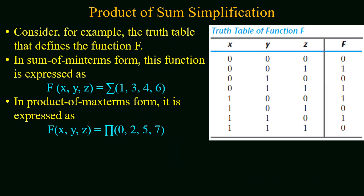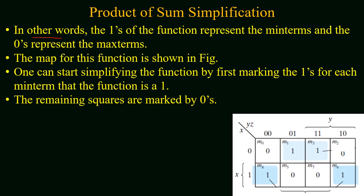Now consider another example in which the truth table defines the function f. The function consists of three variables x, y, and z. In the sum of minterm form, the function can be expressed as sum of minterms at 1, 3, 4, and 6, whereas in the product of maxterm form it is expressed as a product of maxterms at 0, 2, 5, and 7. The ones of the function represent the minterms and the zeros represent the maxterms.